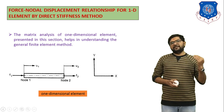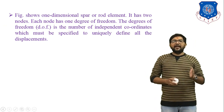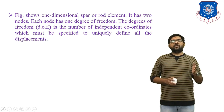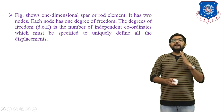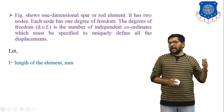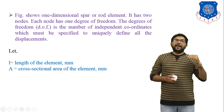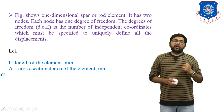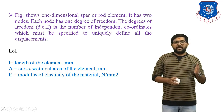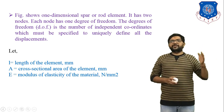This is the one-dimensional element we consider. It has two nodes, and each node has one degree of freedom. The degree of freedom is the number of independent coordinates which must be specified to uniquely define all the displacements. Let small l equal the length of the element in mm. Capital A indicates the cross-sectional area in mm², and capital E indicates the modulus of elasticity of the material in N/mm².